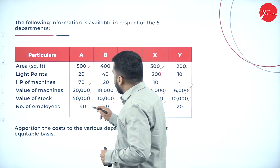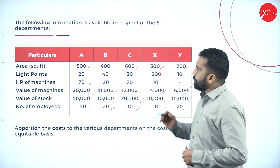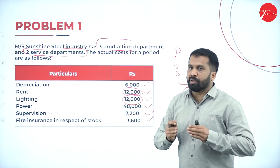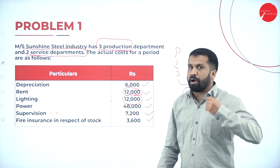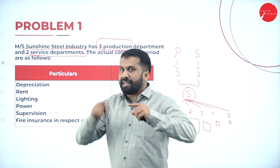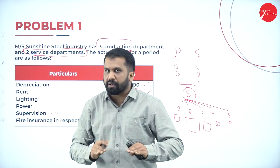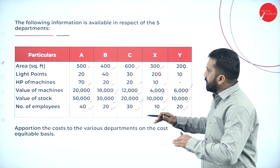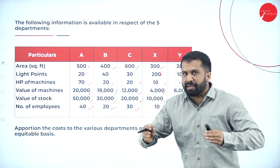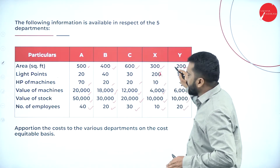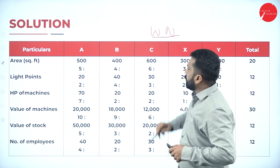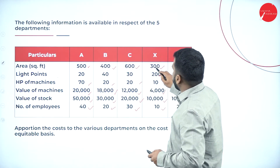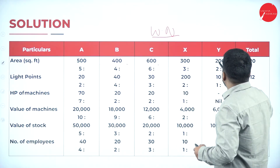Number of employees: 40, 20, 30, 10, and 20. Supervision charges should be distributed among departments based on number of employees. Now before you bifurcate, you have to simplify the numbers — the numbers are big, we don't want big numbers, make it simple. This is called a working note. Area occupied: 500, 400, 600, 300, 200 — simplify to 5, 4, 6, 3, 2. Total is 20.